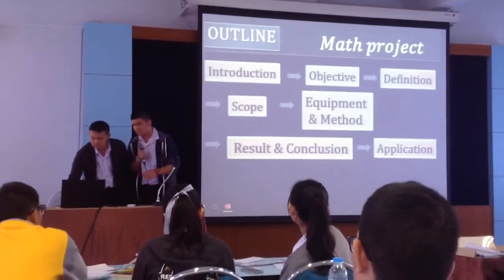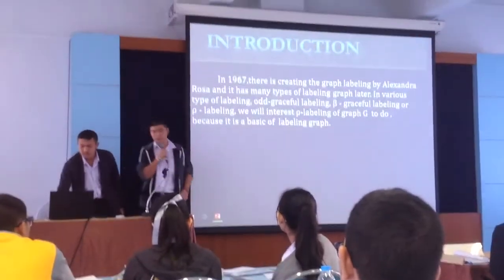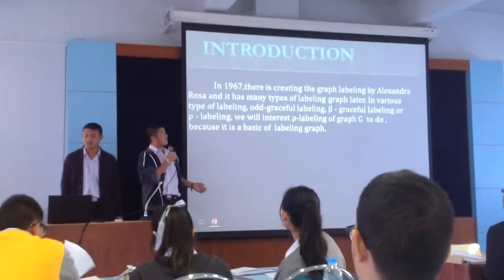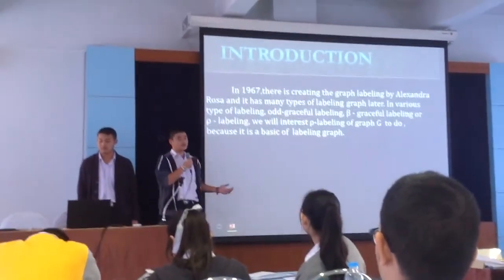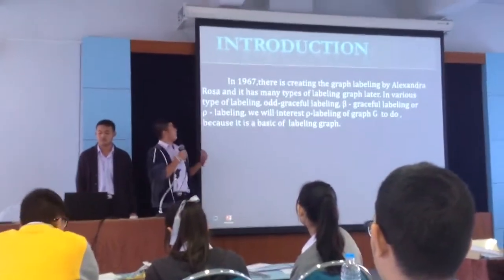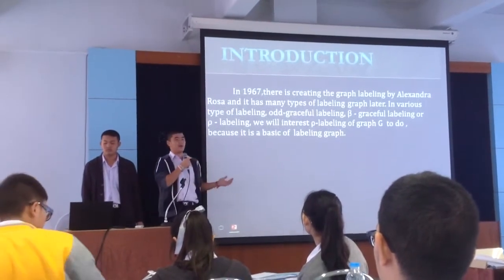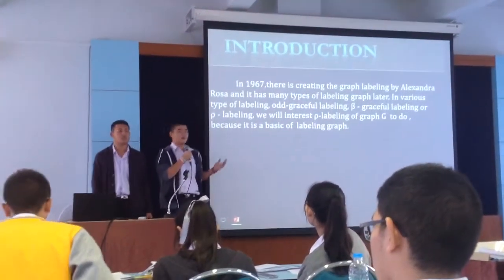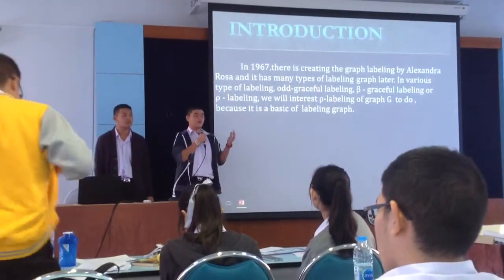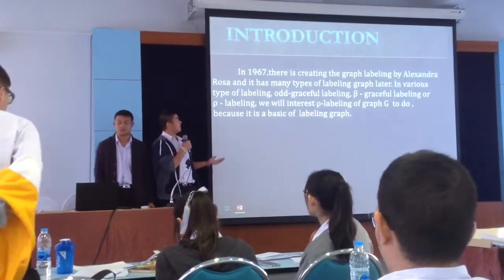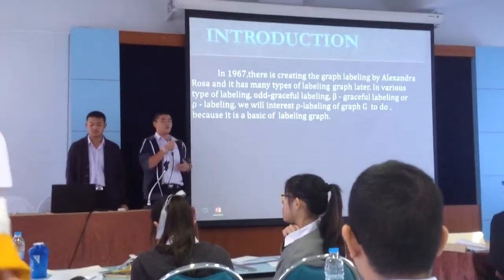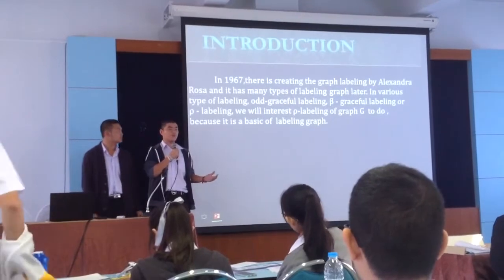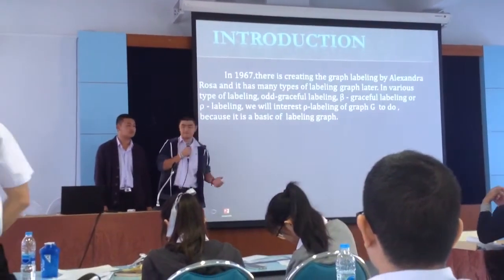First, go to the introduction. In 1967, there was a creating of graceful labeling graph by Alexander Rosa. And it has many types of labeling graph later, such as on-graceful labeling graph, no-graceful labeling graph, or beta-graceful labeling graph. But we need to select the low labeling graph, because it is the basic of labeling graph.